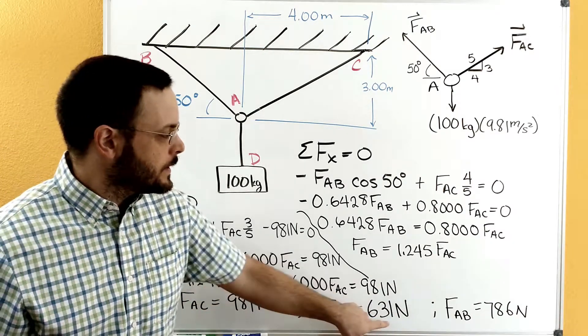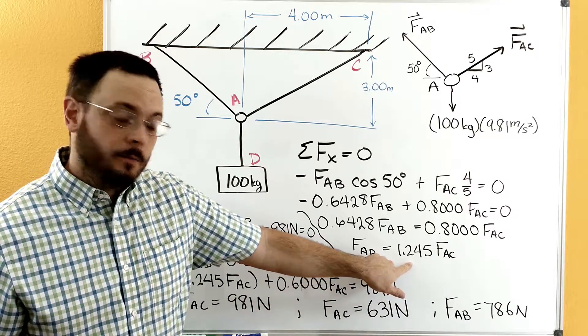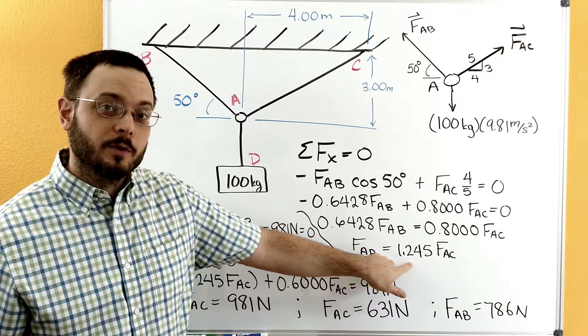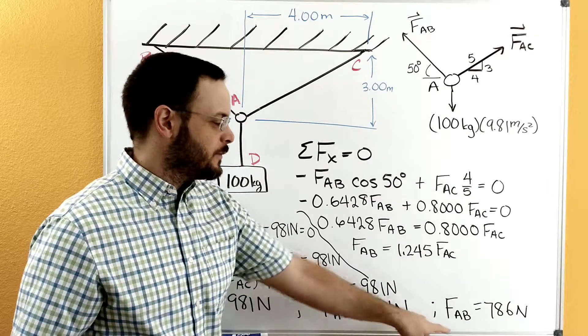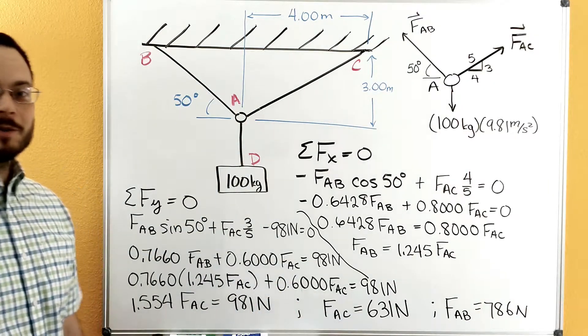We'll take that 631, plug it back in up here, multiply it by the 1.245. And we'll get the 786 Newtons there for the FAB. And we're done on this problem.